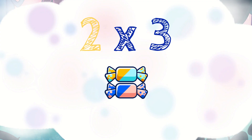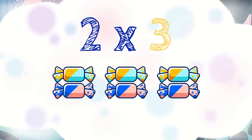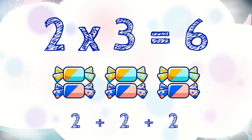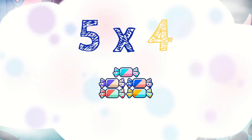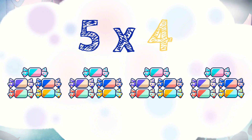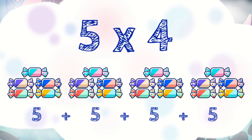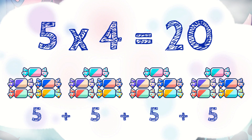Let's repeat this process one more time. The first number is the number of items in each group. The second number is the number of groups. And the result of multiplication is the total number of items. Let's take another example: five times four. Five candies in each group, and there are four groups of five candies. So it will be five plus five plus five plus five, and there are twenty pieces of candy in all. So five times four is twenty.